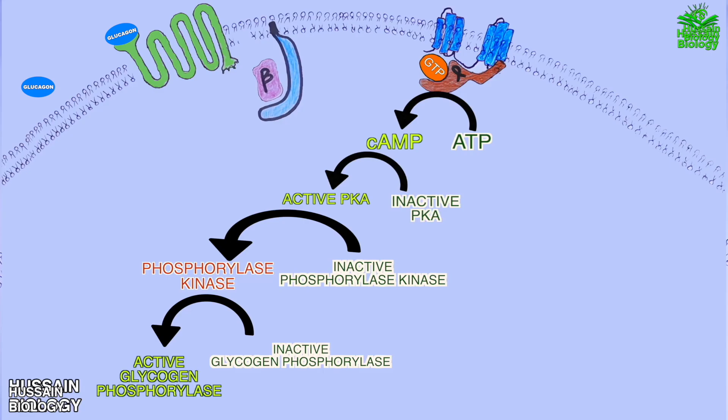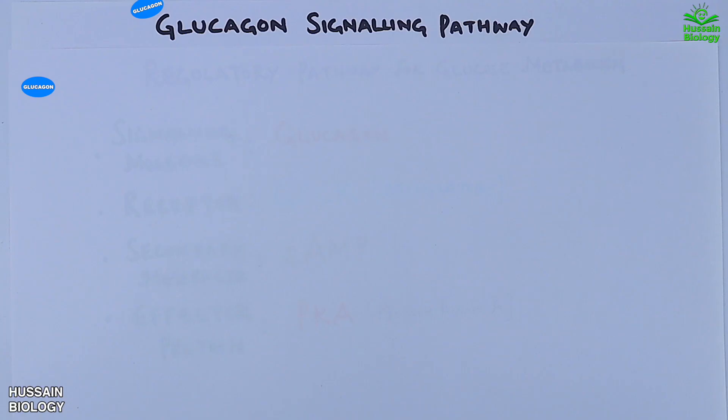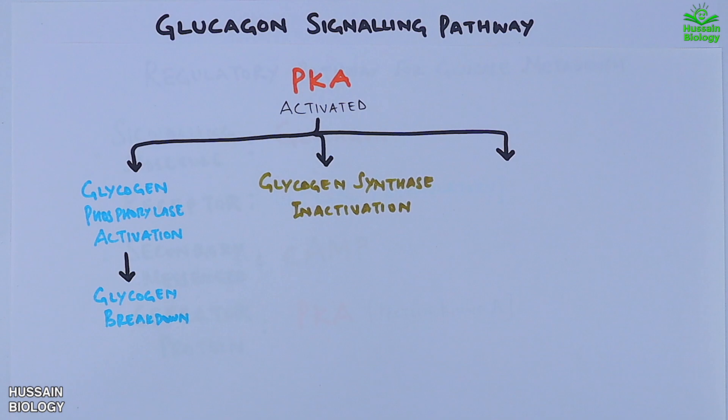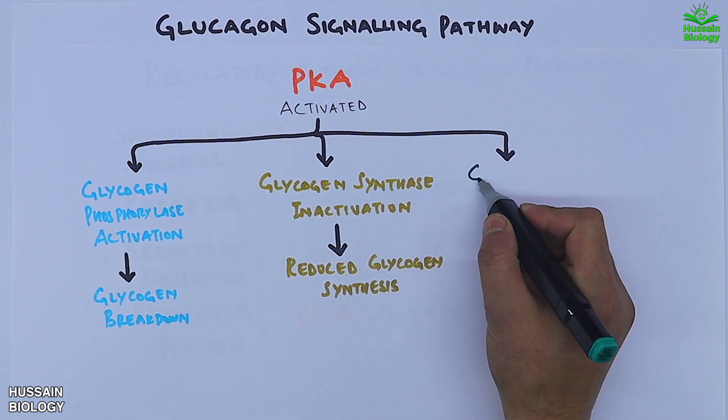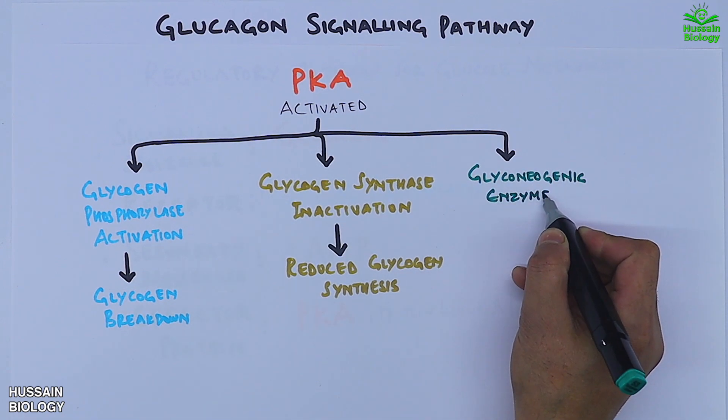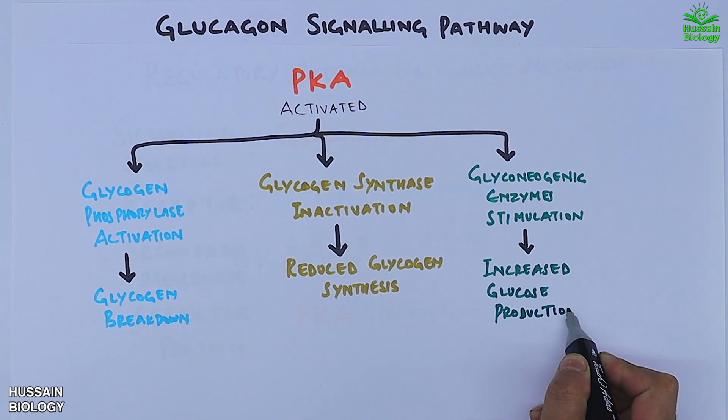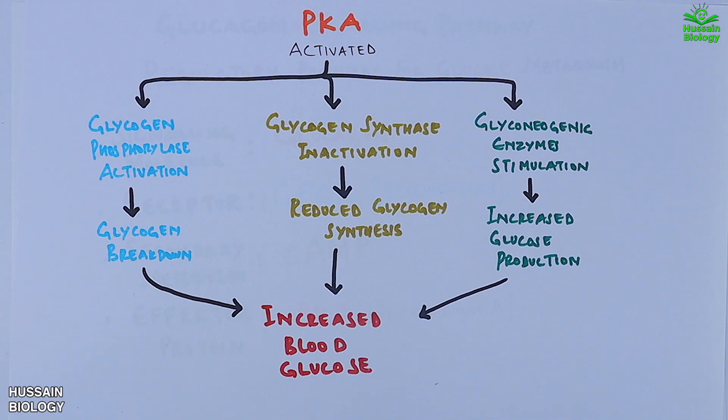The active glycogen phosphorylase then ultimately acts on glycogen and we get glucose molecules. Furthermore, if we see PKA activations: we have already seen the glycogen breakdown; second is the glycogen synthase inactivation which leads to reduced glycogen synthesis; then PKA also drives activation of gluconeogenic enzyme stimulation which leads to increased glucose production. All these factors ultimately lead to increased blood glucose.